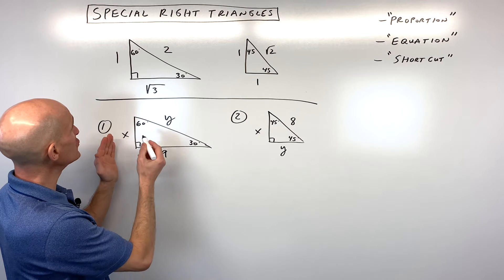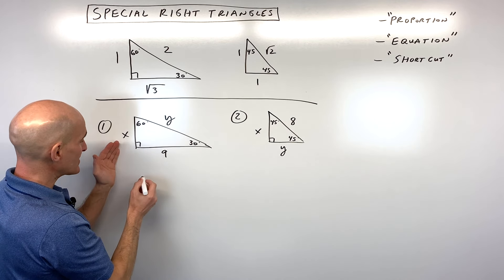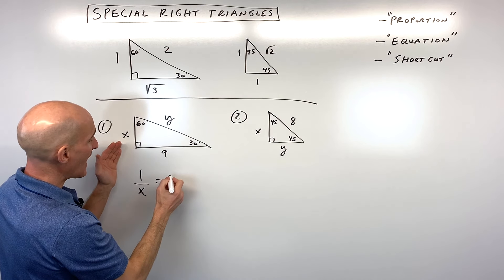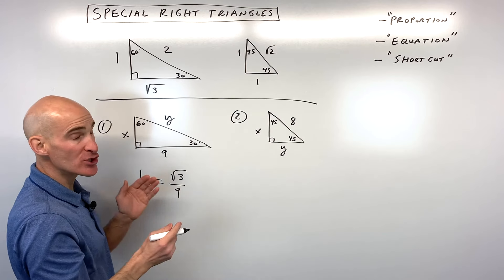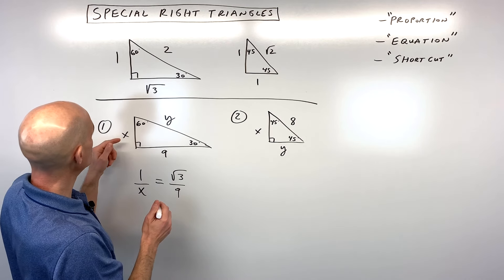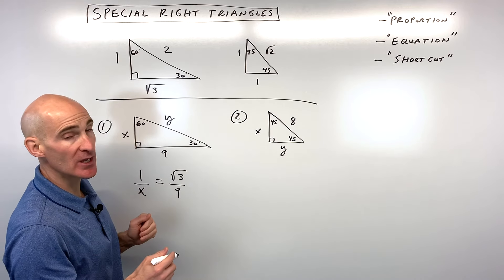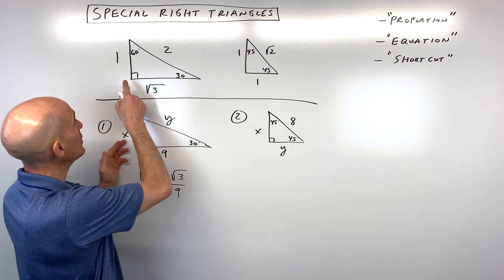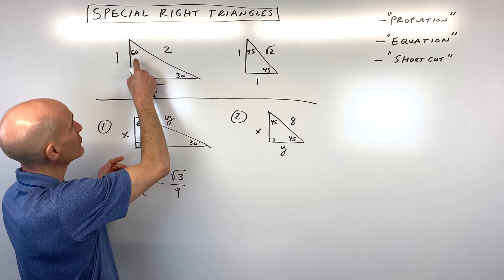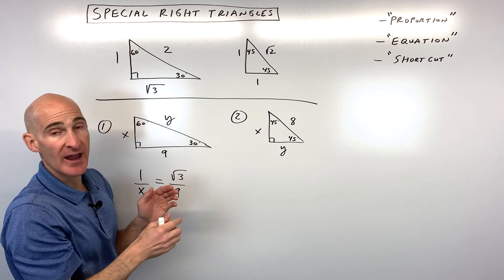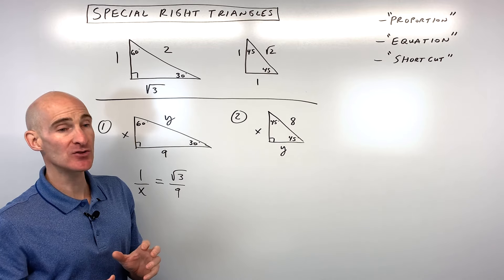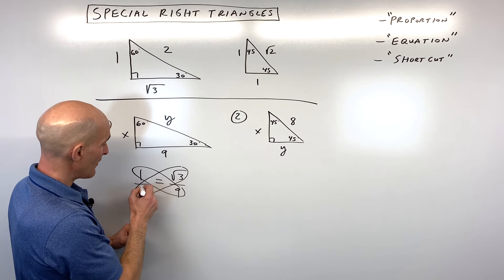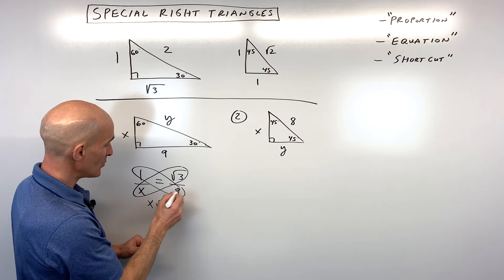For number 1, I'm going to say 1 is to x as square root of 3 is to 9. When you write your proportion, you only want one unknown. You want to match up the short side — the one across from the 30 — with the short side, and the longer leg with the longer leg. Then we cross-multiply and get x times square root of 3, which is x square root of 3, equals 9 times 1, which is 9.